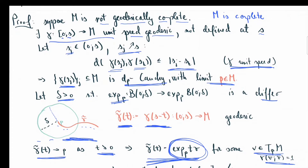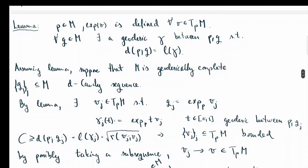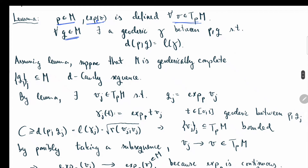Now let's look at the other direction, assuming M is geodesically complete. For that I will need an important lemma. The lemma says: if you're at point p where the exponential map is defined for all tangent vectors, then for every point q, there exists a geodesic γ between p and q realizing the distance between them. In general, between two points of a Riemannian manifold there might not exist a distance-minimizing geodesic — but if the exponential map is defined at p for every tangent vector, then it always does.